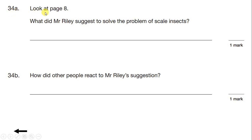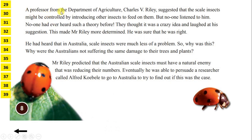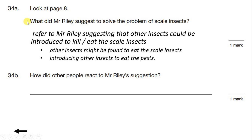Question 34a: Look at page 8. What did Mr Riley suggest to solve the problem of scale insects? Let's keep on reading. A professor from the Department of Agriculture, Charles V Riley — so that will be Mr Riley — suggested that scale insects might be controlled by introducing other insects to feed on them. That's our answer for this part. We need to refer to Mr Riley suggesting that other insects could be introduced to kill or eat the scale insects — for example, other insects might be found to eat the scale insects, or introducing other insects to eat the pests.